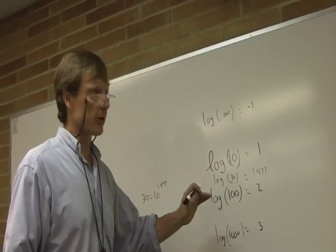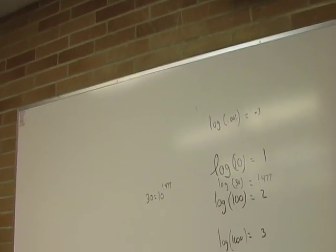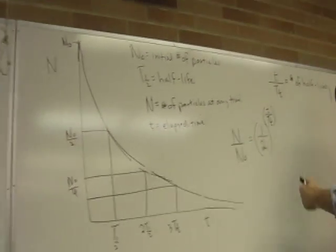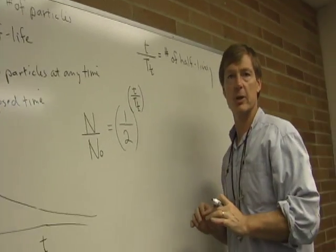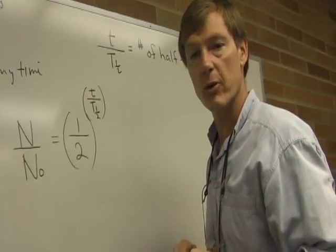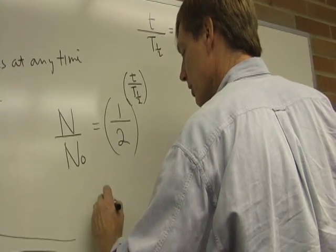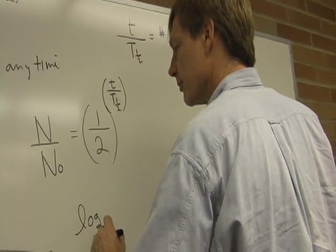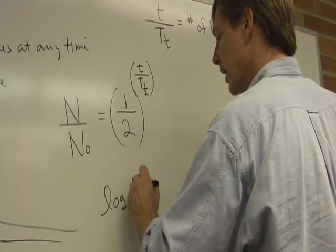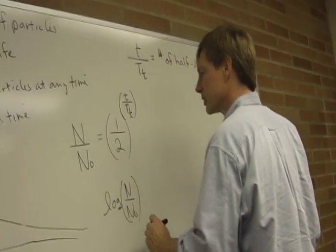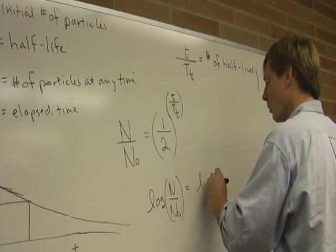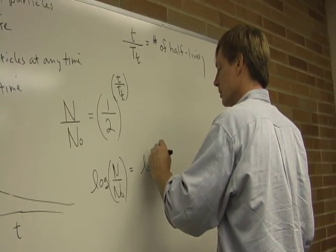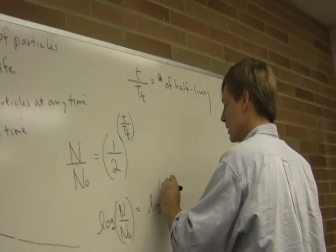Now, the reason I'm telling you this about logarithms is that we need to break down this exponent here so that we can get at it. And to do that, to get that exponent down into something we can work with, we need to take the log of both sides. So here's how it works. The logarithm of n over n sub 0, the number of particles divided by the number I originally started with, is equal to the logarithm of 1 half to the t over t 1 half.